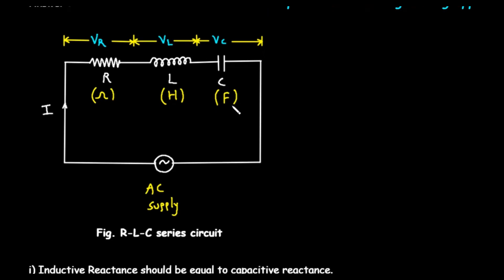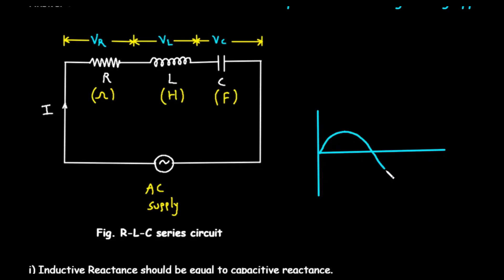Finally, at the bottom, we have the AC supply — our power source. Unlike a battery which provides a constant DC voltage, an AC supply provides a voltage that continuously alternates, swinging back and forth in a sine wave pattern. This alternating nature is key to understanding resonance. So we have a resistor, an inductor, and a capacitor all connected to an AC power source — this is our RLC series circuit.